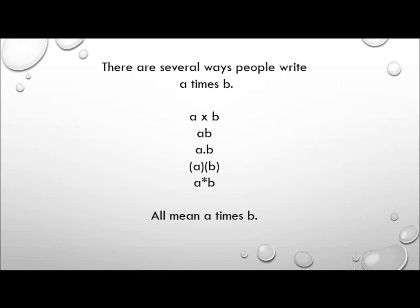Now there are several ways that people write a times b. For example, they might use a cross, which may or may not look like the letter x. They might just put the two letters together with nothing between them, which means a times b. They might use a dot, so a dot b means a times b. They might put them each in brackets next to each other. Or they may use an asterisk, which on a UK keyboard is shift eight. All of these mean a times b.